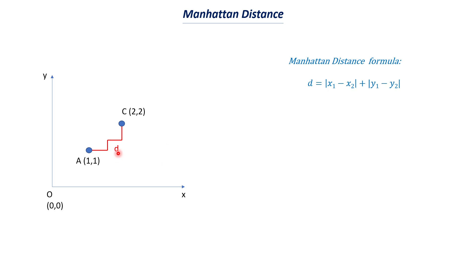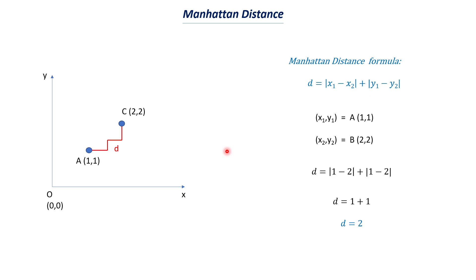The formula for Manhattan distance is: D equals the modulus of (X1 minus X2) plus the modulus of (Y1 minus Y2). Using the same points — X1=1, Y1=1, X2=2, Y2=2 — we get modulus of (1 minus 2) plus modulus of (1 minus 2), which equals modulus of minus 1 plus modulus of minus 1, giving D equals 2. We take the modulus to ignore the negative sign, since a negative distance does not make any sense.